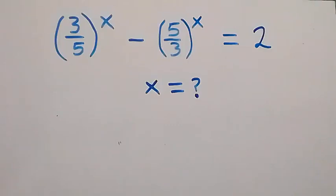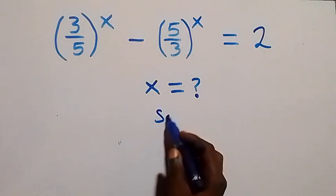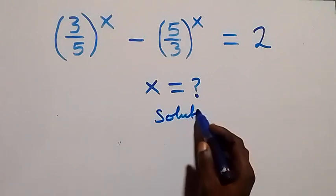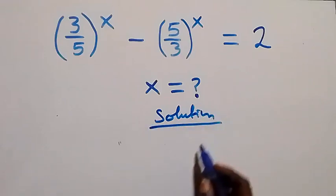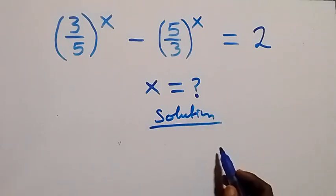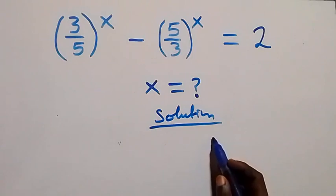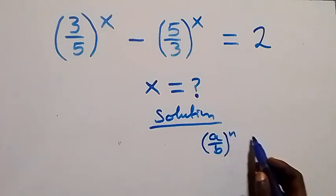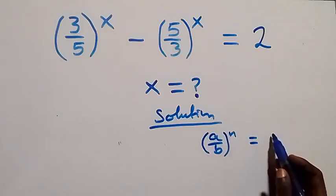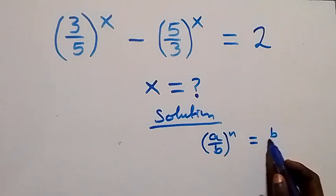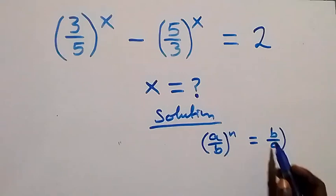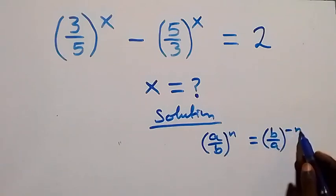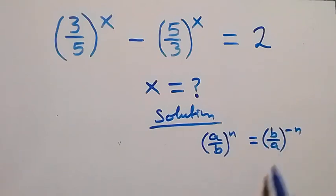Hello, you are welcome. How to solve this nice exponential problem. From what we have here, when we follow the law of indices: when we have (a/b) raised to power n, we can write this as (b/a) raised to power minus n — where minus here serves as the reciprocal.